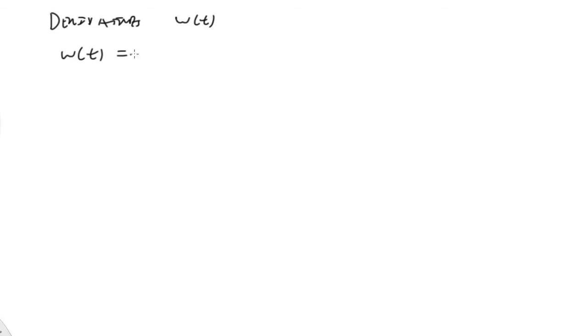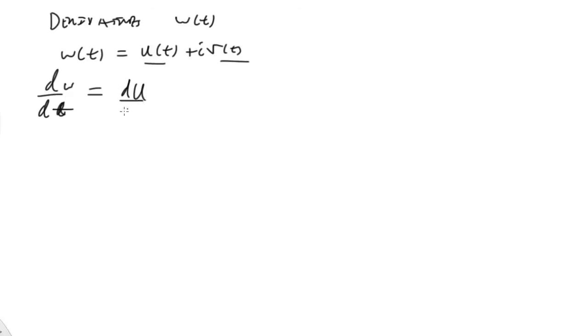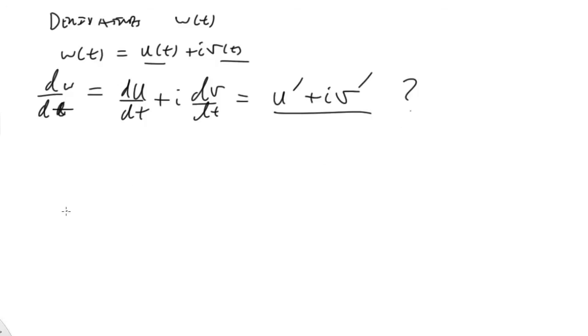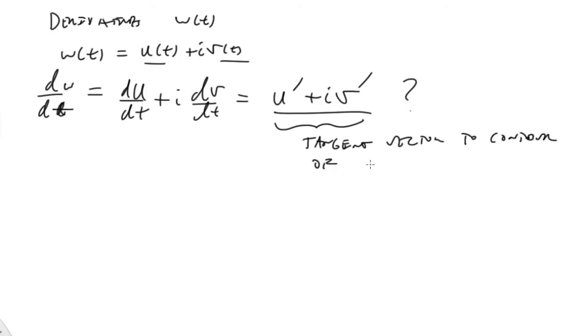Now let's talk about derivatives of W of t. Remember W of t equals U(t) plus i·V(t), and provided that U and V are both differentiable, we can write dW/dt simply as dU/dt plus i·dV/dt, or just u-prime plus i·v-prime. This gives us a tangent vector to the contour of W(t).